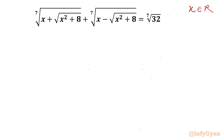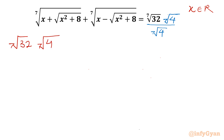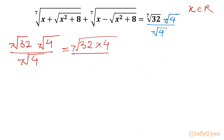Let's get started. I will begin with one algebraic manipulation. In the RHS I will consider the 7th root of 4 divided by 7th root of 4 — multiplying numerator and denominator. So I can write the 7th root of 32 times 7th root of 4 divided by 7th root of 4. Since the exponent is the same, we can multiply the bases: 32 times 4. So it is the 7th root of 128 divided by the 7th root of 4.